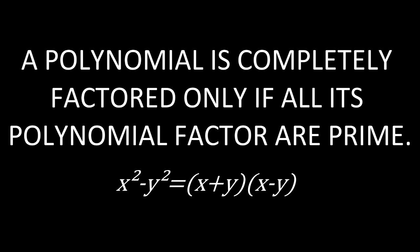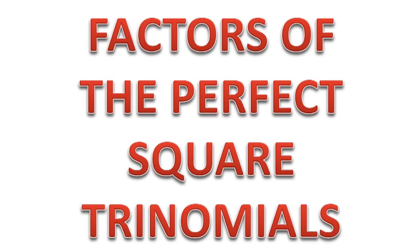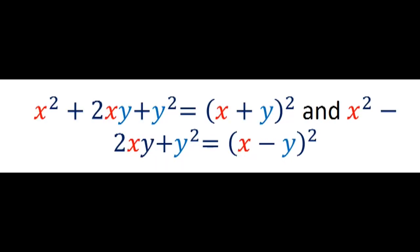Remember that a polynomial is completely factored only if all its polynomial factors are prime. Second, factors of the perfect square trinomial. Factoring a perfect square trinomial results in the square of a binomial. The first term is the square root of the first term of the binomial, and the second term is the square root of the third term. It is important to check if the given trinomial is really a PST. In symbols: x squared plus 2xy plus y squared equals the square of x plus y, and x squared minus 2xy plus y squared equals the square of x minus y.